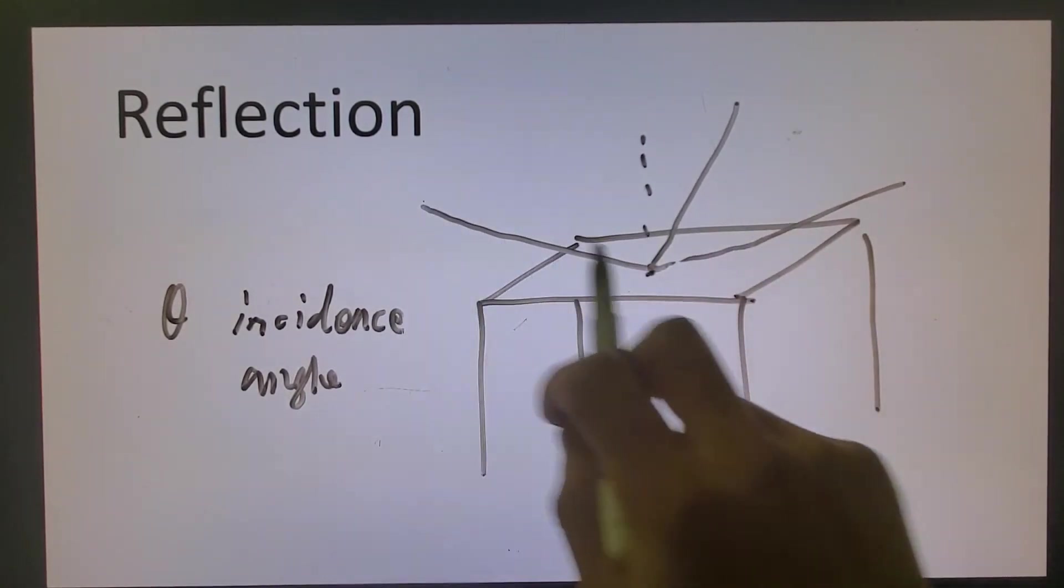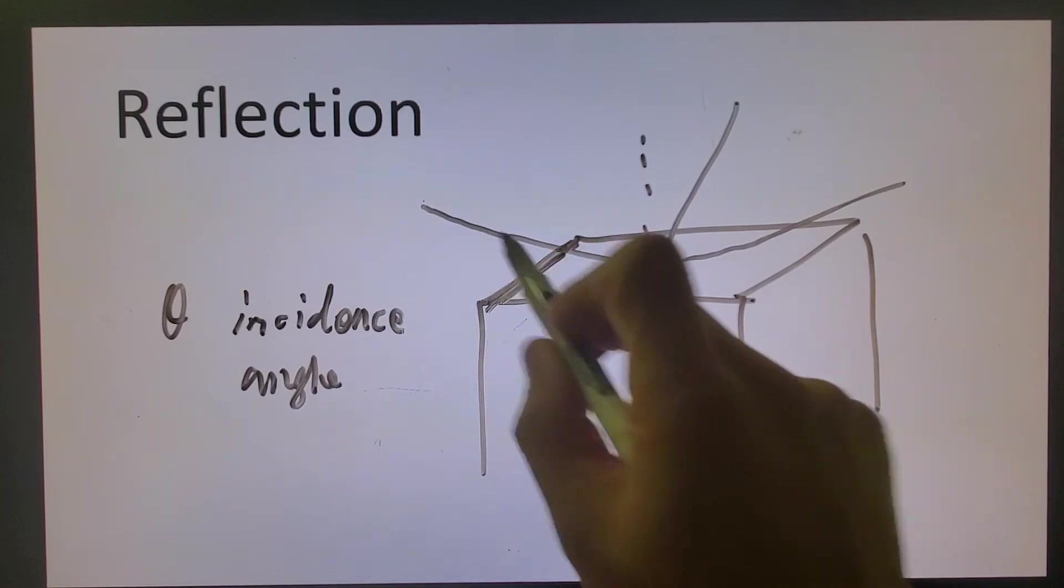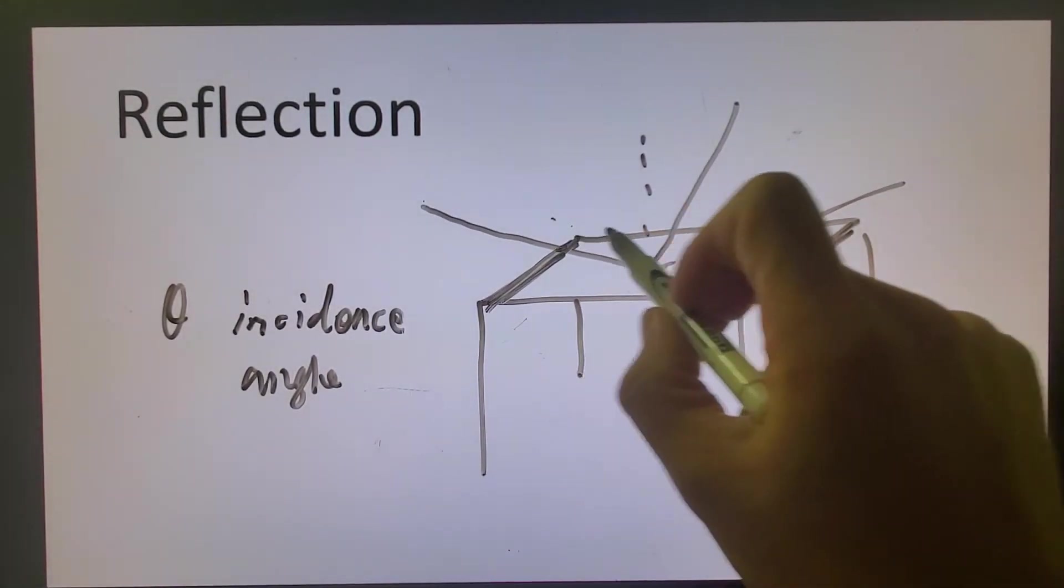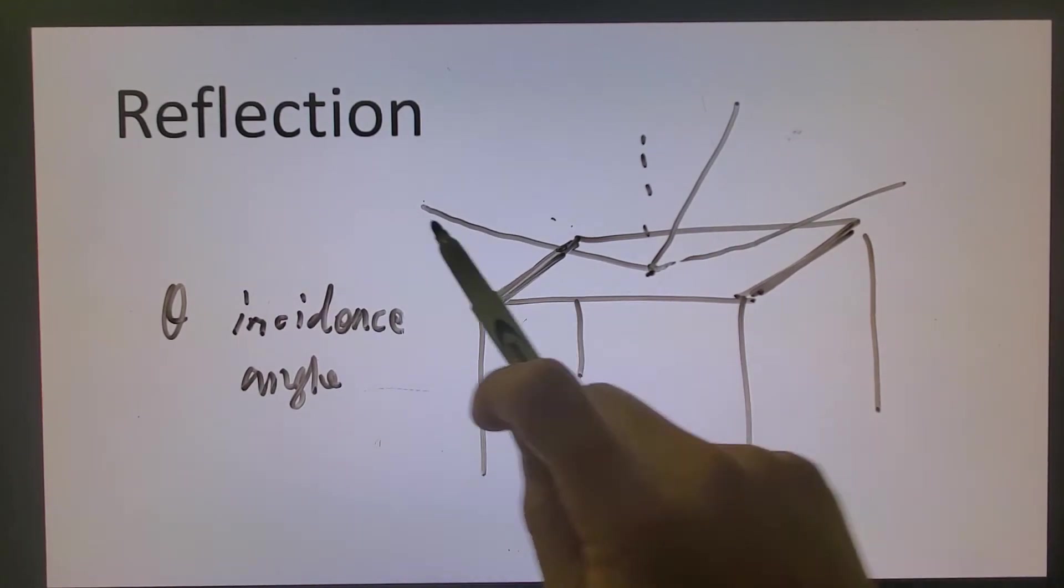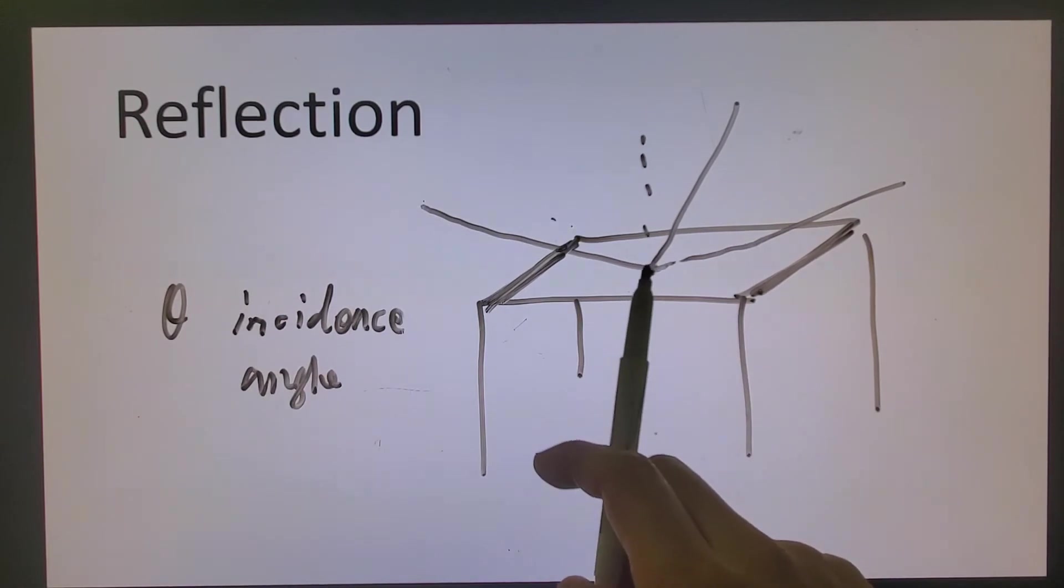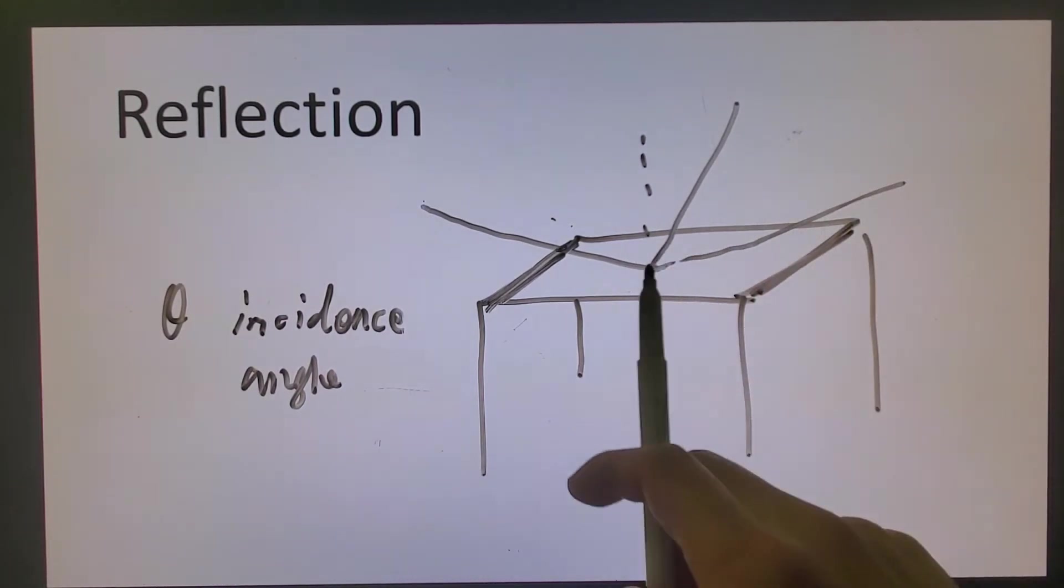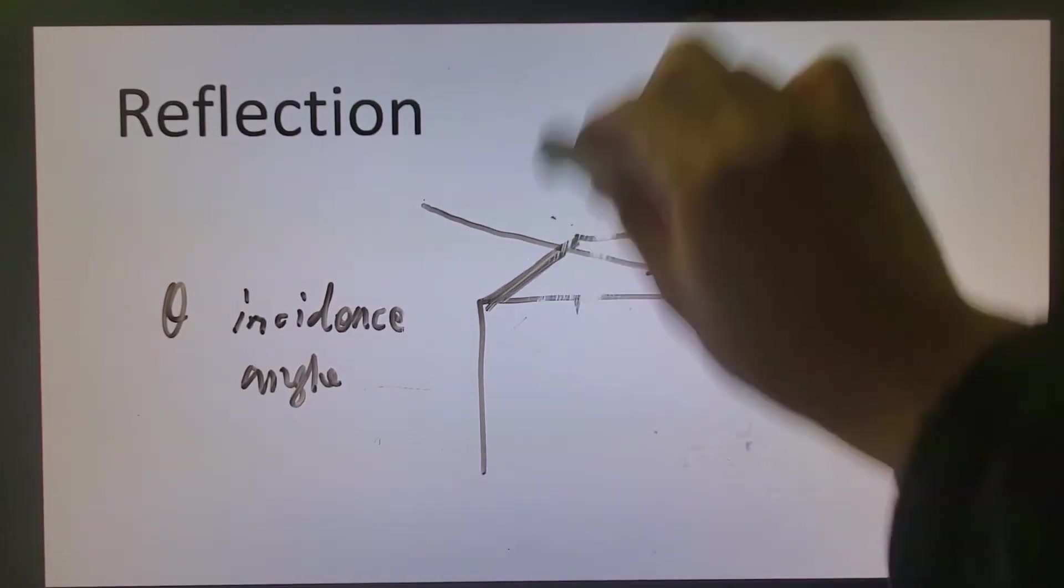It must be in the same plane. If you're entering from this edge, then it should go out from this edge. It cannot go out from the other side of the table. So let me repeat that again. The incidence beam, the reflected beam, and also the normal, those three lines should be on the same plane. So that is called reflection.